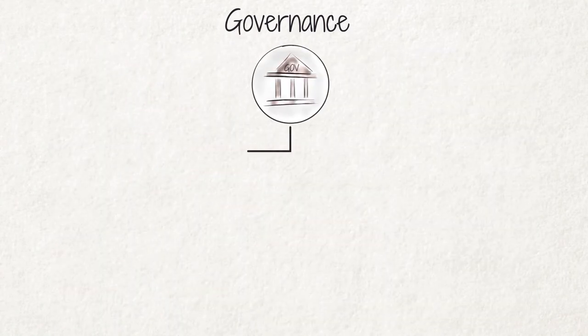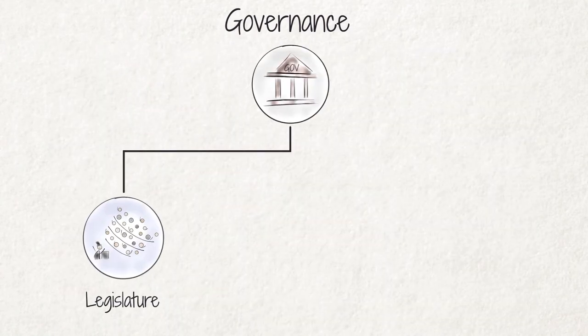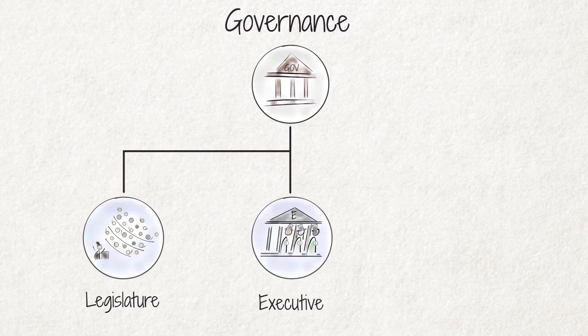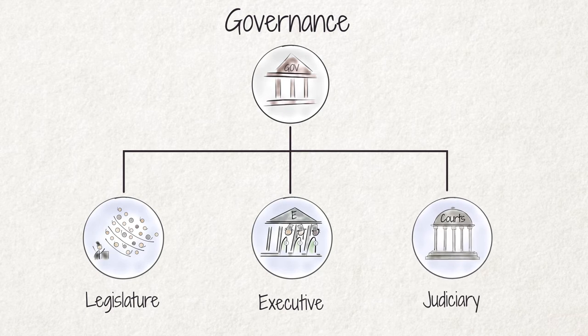Government normally consists of the legislature, which creates the laws, the executive, which implements the laws, and the courts or judiciary, which interpret and apply the laws.